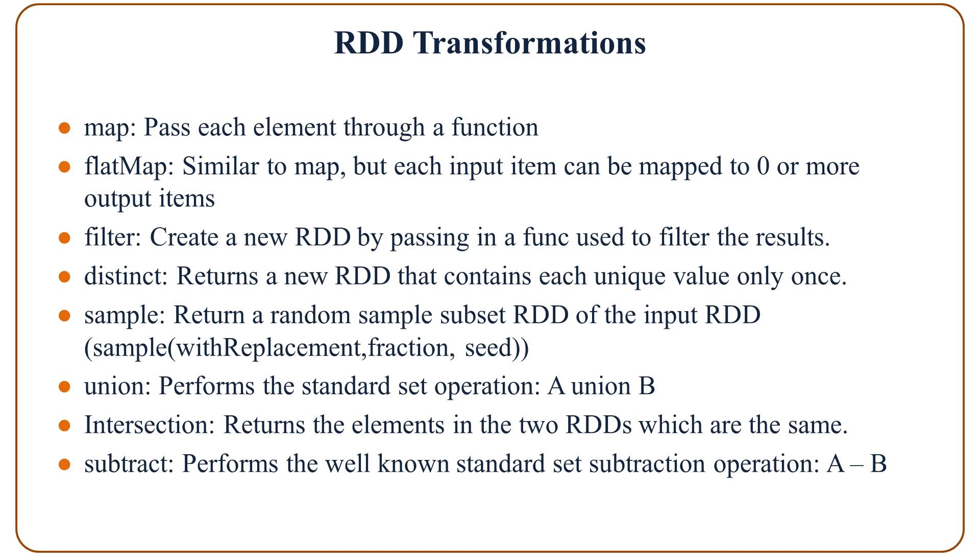Now we talked about RDD transformations. The first transformation is map - map passes each element through a function. FlatMap is similar to map, but each input item can be mapped to zero or more output items. Filter creates a new RDD by passing it to a function used to filter the results. Distinct returns a new RDD that contains each unique value only once. Sample returns a random sample subset RDD of the input RDD. Union performs the standard set operation such as A union B. Intersection returns the elements in the two RDDs which are the same. Subtract performs the well-known standard set subtraction operation.